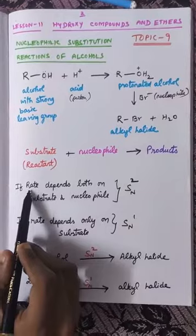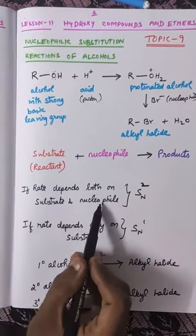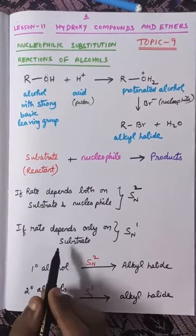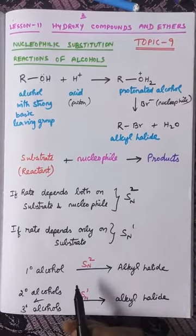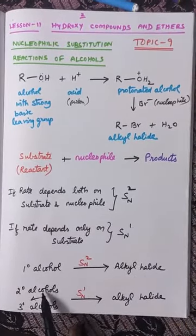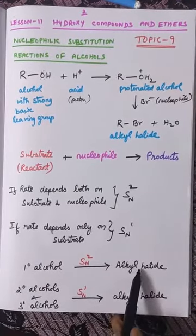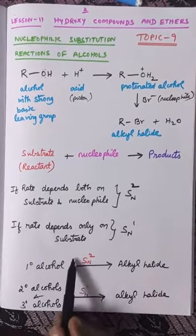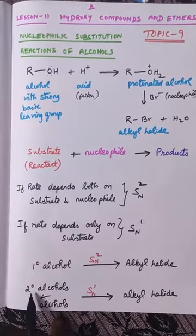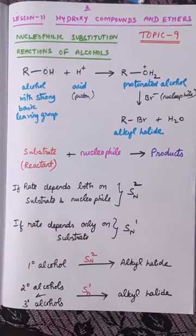In an SN2 reaction, the rate of the reaction depends both on the concentration of the substrate as well as the nucleophile. In an SN1 reaction, the rate of the reaction depends only upon the concentration of the substrate and not upon the nucleophile. Alkyl halide formation from primary alcohol follows SN2, while from secondary or tertiary alcohol it follows SN1 mechanism.